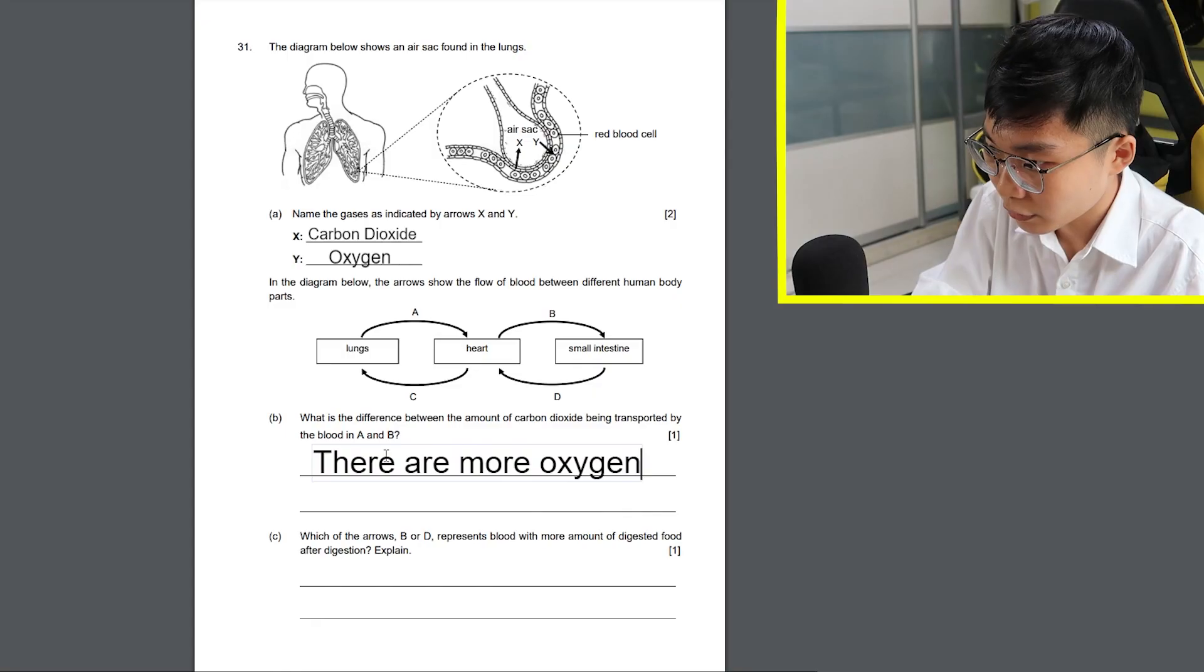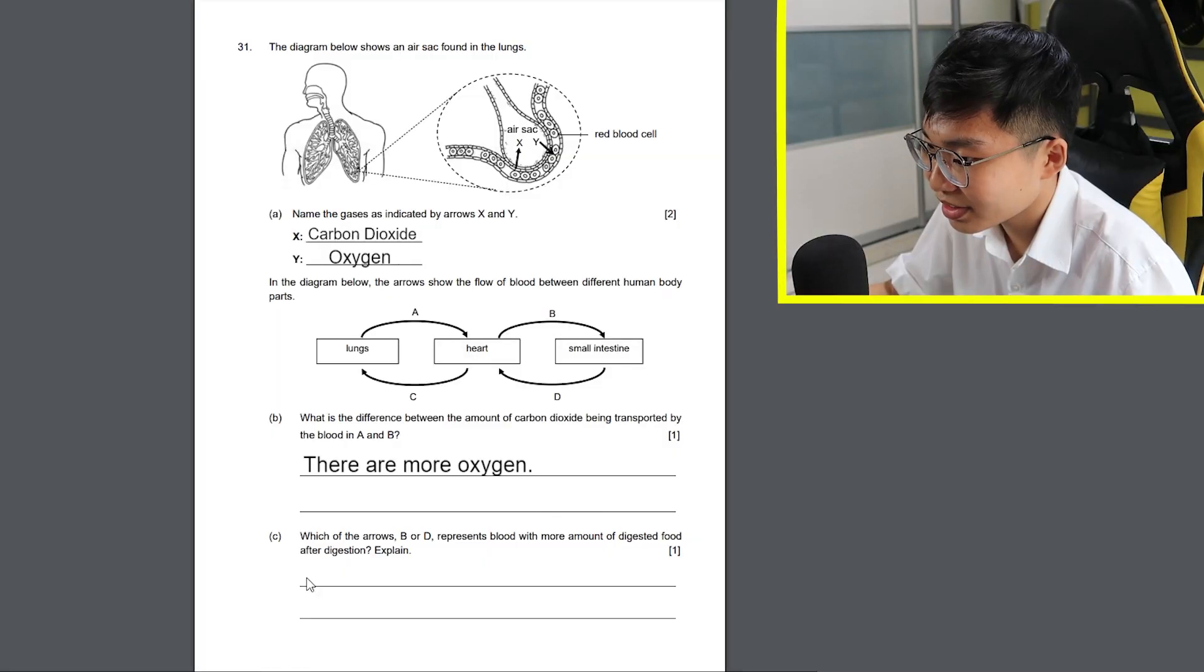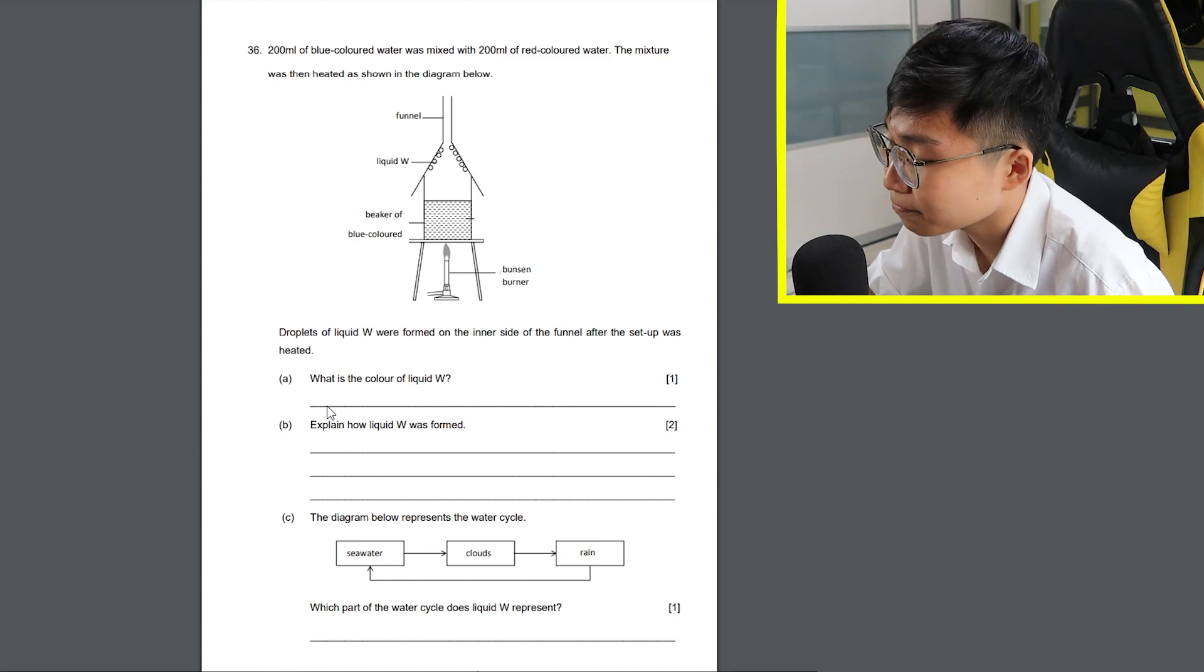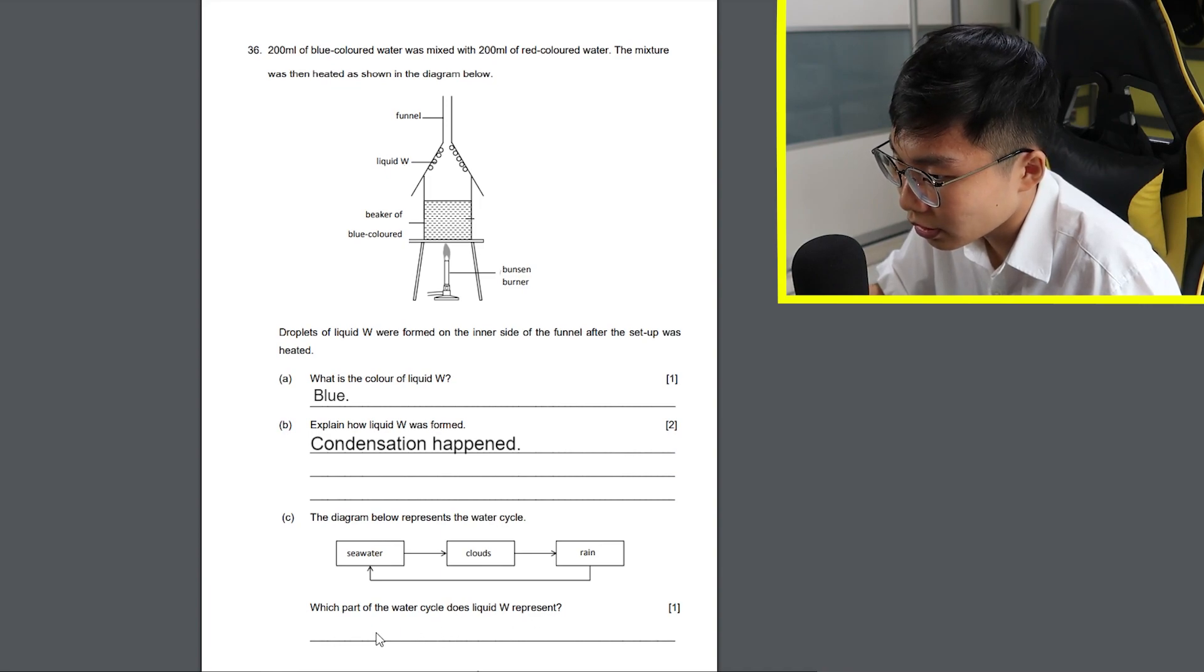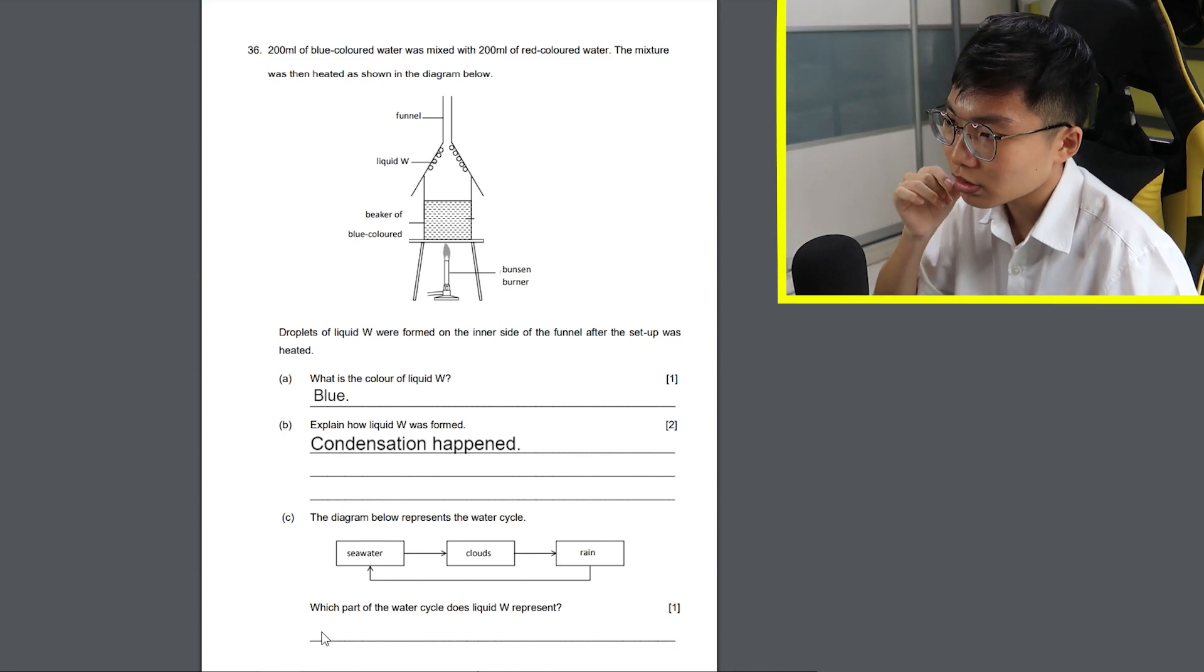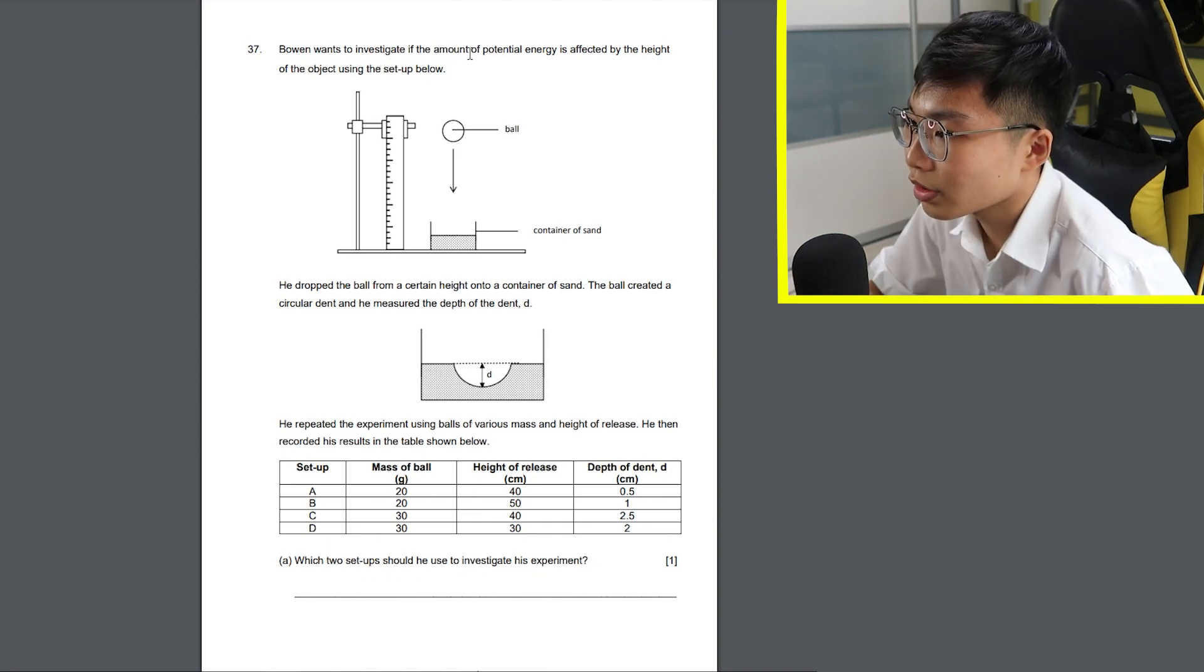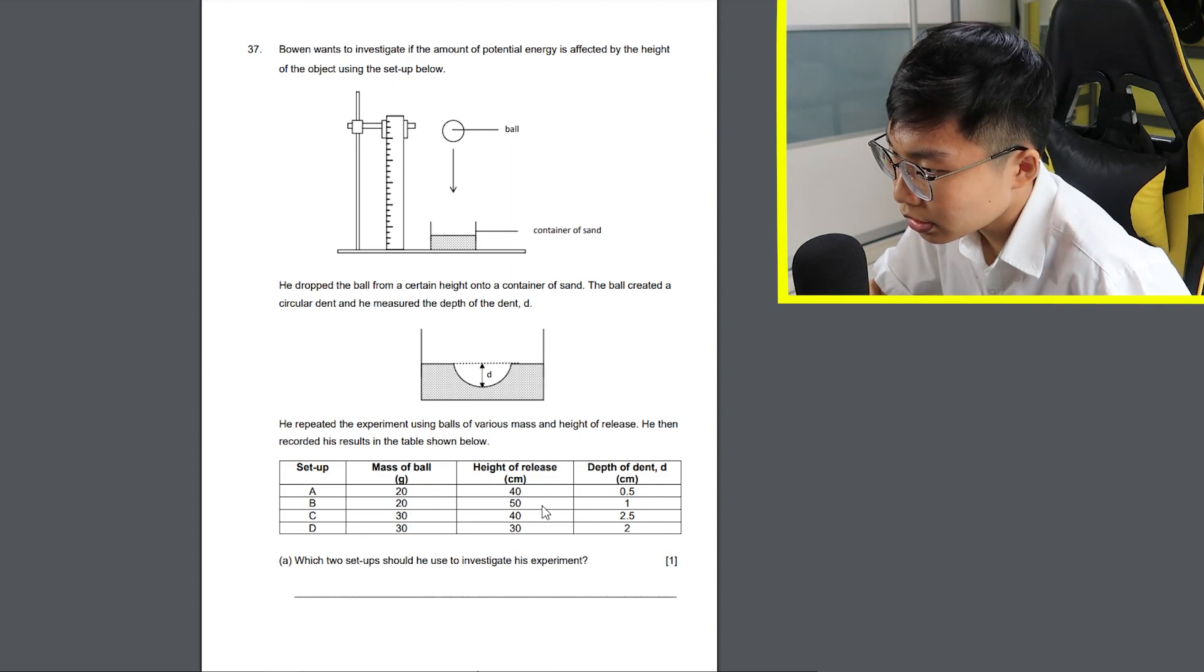I have no idea. I have no idea. I have no idea. What? Doesn't make sense. I think it's D. What is the color of liquid W? Surely it's blue, right? Explain how liquid W was formed. Condensation? But I don't think that's worth 2 marks, right? 1 mark for each word, you know. Which part of the water cycle does liquid W represent? Clouds or rain? I'm gonna go with clouds, but I'm not too sure. Wow, such a long question for just 1 mark. Which 2 setups should he use to investigate his experiment? Investigate if the amount of potential energy is affected by the height of object. So same off-ball but different height of release? A and B, I think.